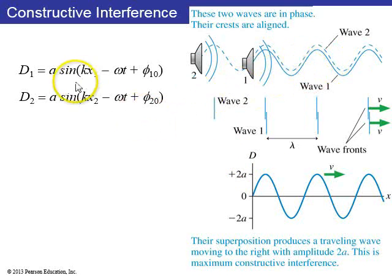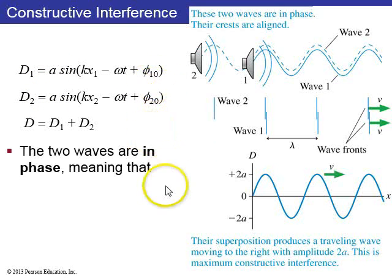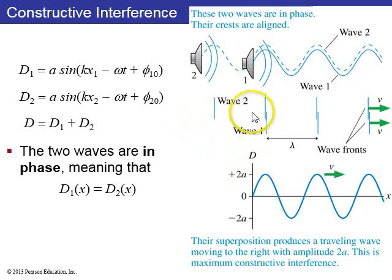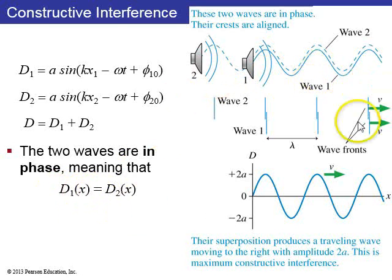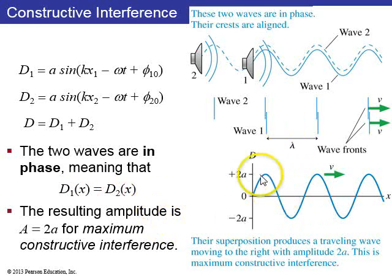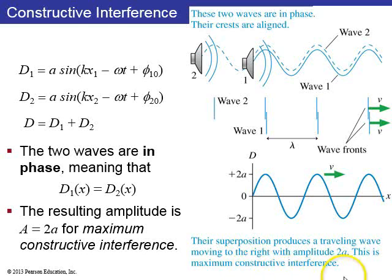So here we have two waves. They have the same frequency and wave number k and omega, and the same amplitude lowercase a, but they may or may not have different phase constants. If the phase constants are such that the waves are in phase, that means the crests from wave 1 are lined up with the wave fronts from wave 2. The displacement from speaker 1 equals the displacement from speaker 2 for all values of x, making the resulting wave a sine wave again but with amplitude 2a. This is called maximum constructive interference.